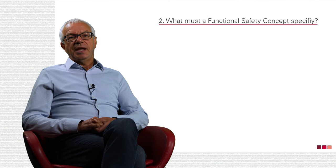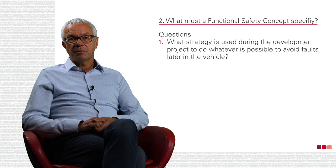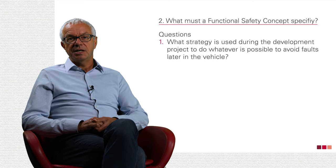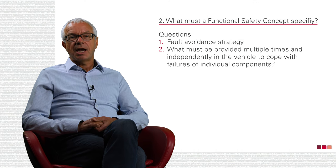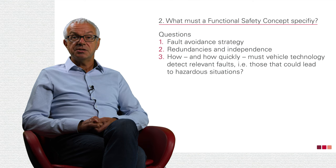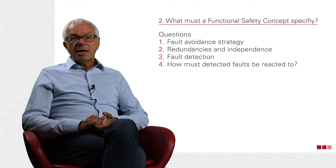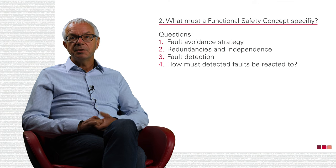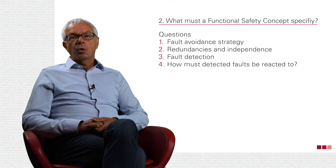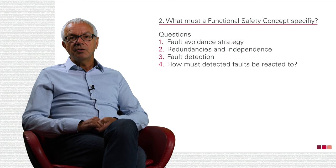I would now like to explain which questions must be answered by the functional safety concept. What strategy is used in the development project to avoid faults later in the vehicle as far as possible? What must be provided multiple times and independently in the vehicle to cope with failures of individual components? How and how quickly must vehicle technology detect relevant faults — those that could lead to hazardous situations? How must detected faults be reacted to? For example, to which safe state must the vehicle technology switch, and how quickly? If a timely change is not possible, what does a transition state with as little risk as possible look like? This could be, for example, slow braking of the vehicle.